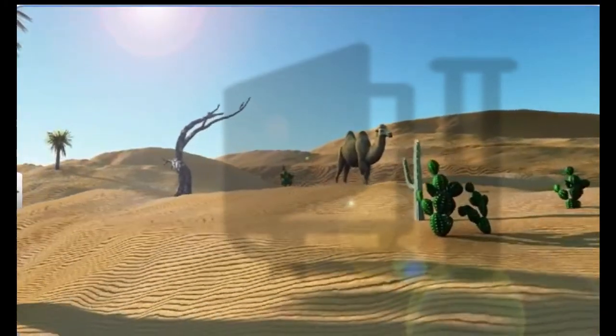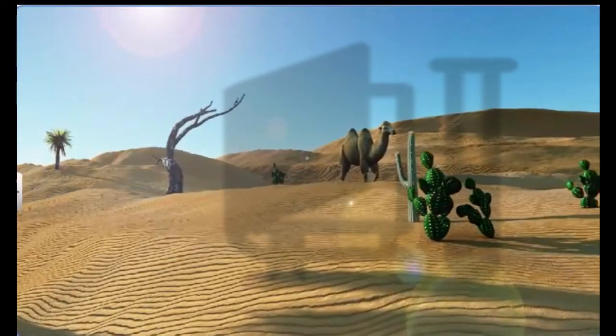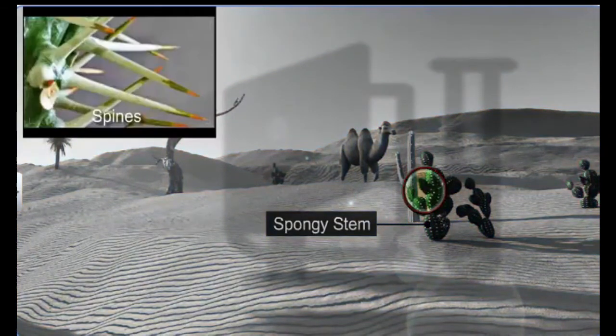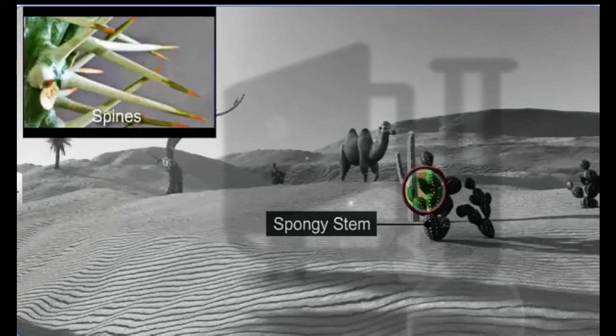For instance, desert plants have developed special mechanisms such as spongy stems which aid in storing water. The leaves too are reduced to tiny pointed spines which decrease the loss of water due to transpiration.